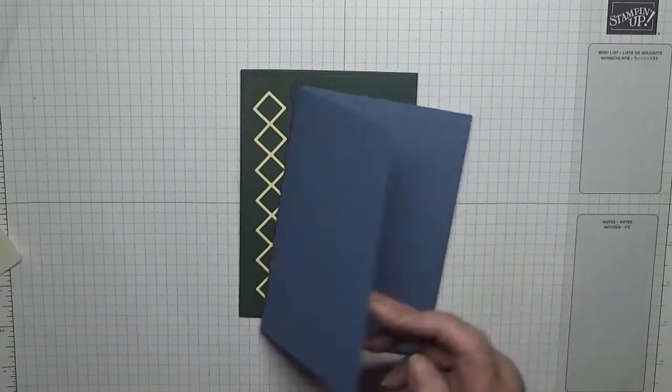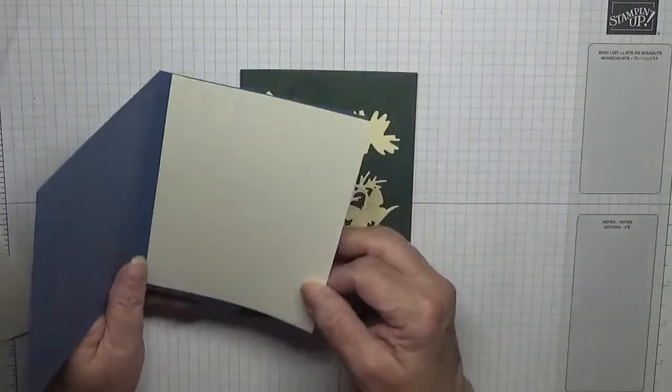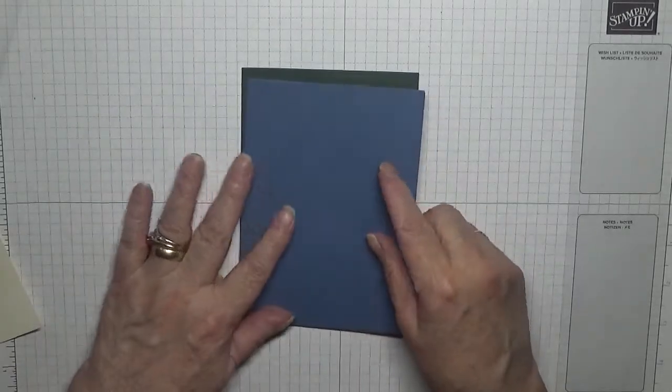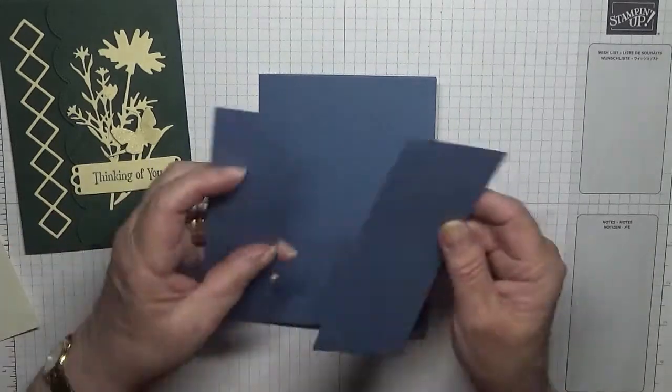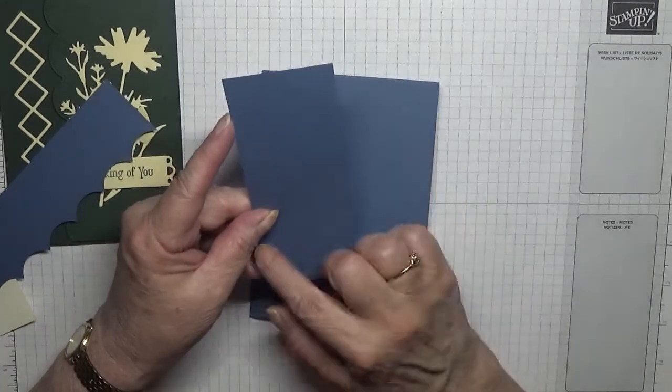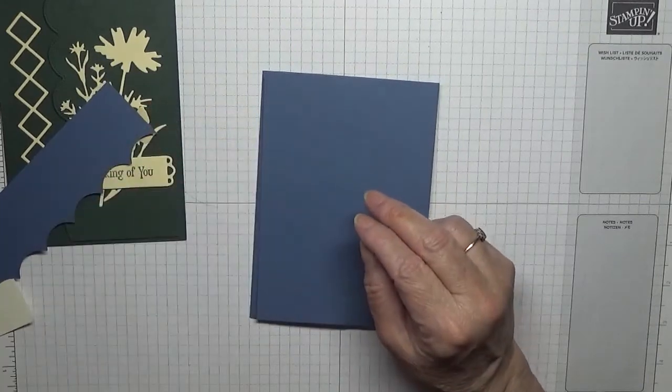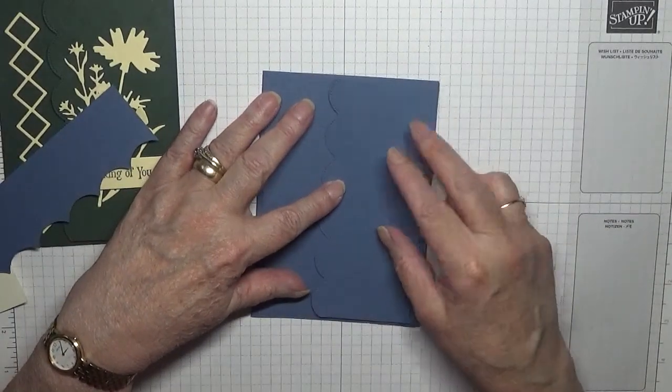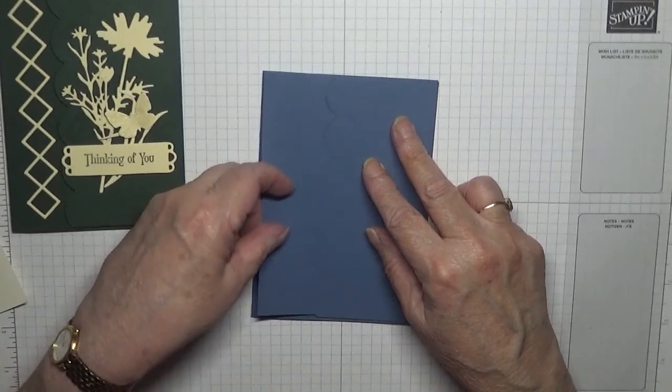I've got a card base of eight and a quarter by five and seven eighths. I have got a piece of Very Vanilla at five and five eighths by three and seven eighths for the inside. I have got a piece that is two and one eighths by five and five eighths.